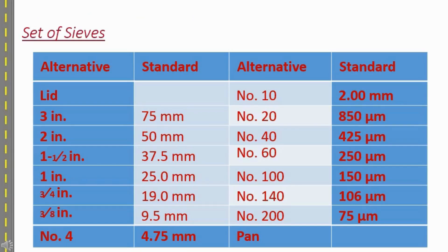The sieve set used in this test method ranges from three inch down to number 200 (75 micrometer), with sizes mentioned in millimeters. At the start of the sieve set, a lid is placed on top and a pan at the bottom for accumulation of the soil sample.